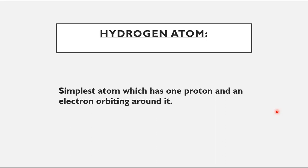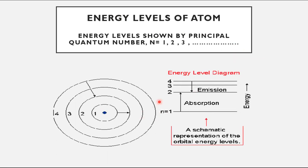The hydrogen atom produces what is called a line spectrum, which we will now examine. In this diagram, the energy levels are shown with respect to quantum numbers. The closest orbit is quantum state 1, followed by quantum state 2 in increasing order. Each orbit has a specific quantum state assigned to it.